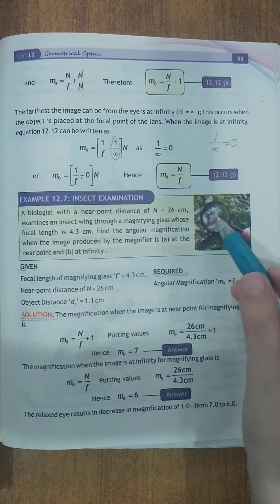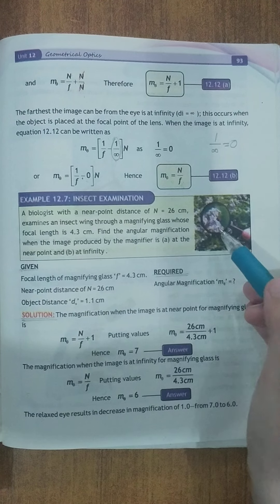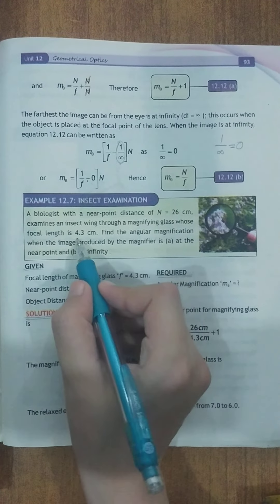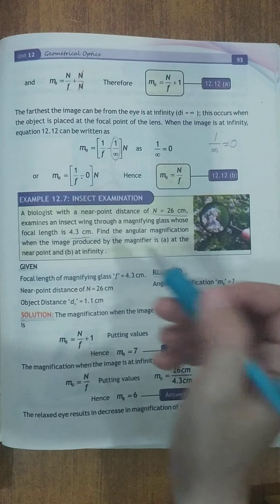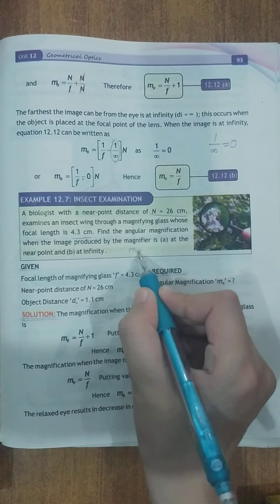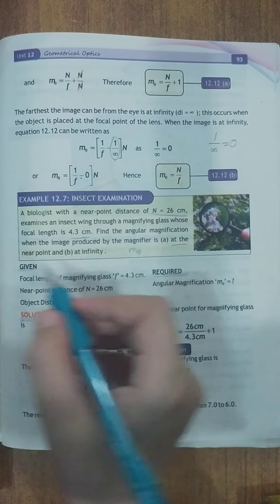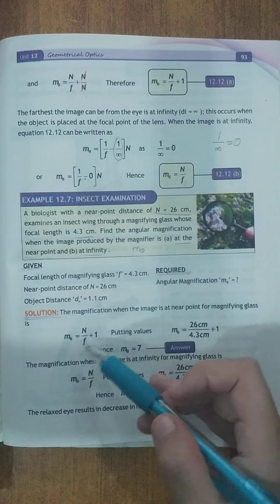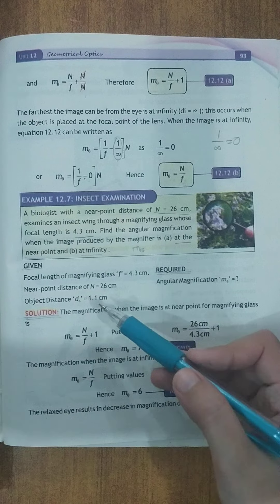Is magnifying glass se biologist ek insect ko dekh raha hai. Is glass ka focal length hume given hai 4.3 cm. Or near point distance aap ke paas n given hai. Aur aap se m theta ke baare mein angular magnification ke baare mein puchha ja raha hai. Near point ke liye aur infinity ke liye. Given me dekhty hai ke hamara paas focal length given hai, near point distance given hai.